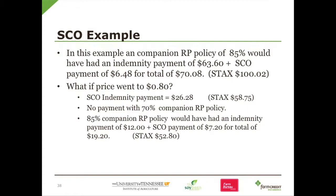If we had a companion policy of 85%, we would have had an indemnity payment on the underlying policy, and SCO would have paid about $6.48 — because with 85% coverage on the underlying policy, we only get 1% on SCO, so it doesn't pay much. When the price went to $0.08, the SCO indemnity would have been about $0.26 to $0.28, while STAX would pay $0.58 to $0.75. With an 85% policy, we'd have had an indemnity payment of $12, and SCO paid $7.20, giving a total of $19.20, versus STAX paying about $52.80.